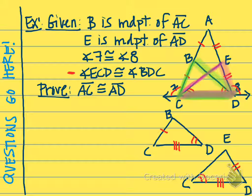Somehow I need to state that these two triangles are congruent. I've already got an angle and a side, which means I either need another angle or another side — either ASA or SAS. I do know something about angles 7 and 8, but those are outside of the triangles. Those might help me to show that the interior angles at C and D are congruent, because they are supplementary to congruent angles. So I could use ASA to prove these two triangles congruent.